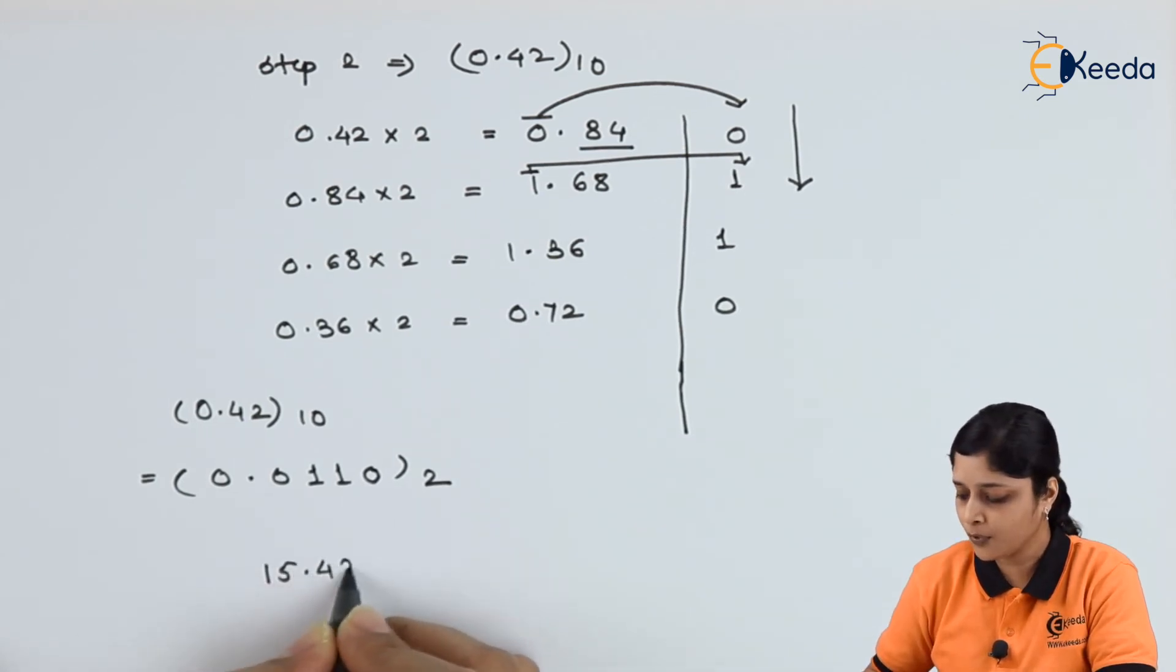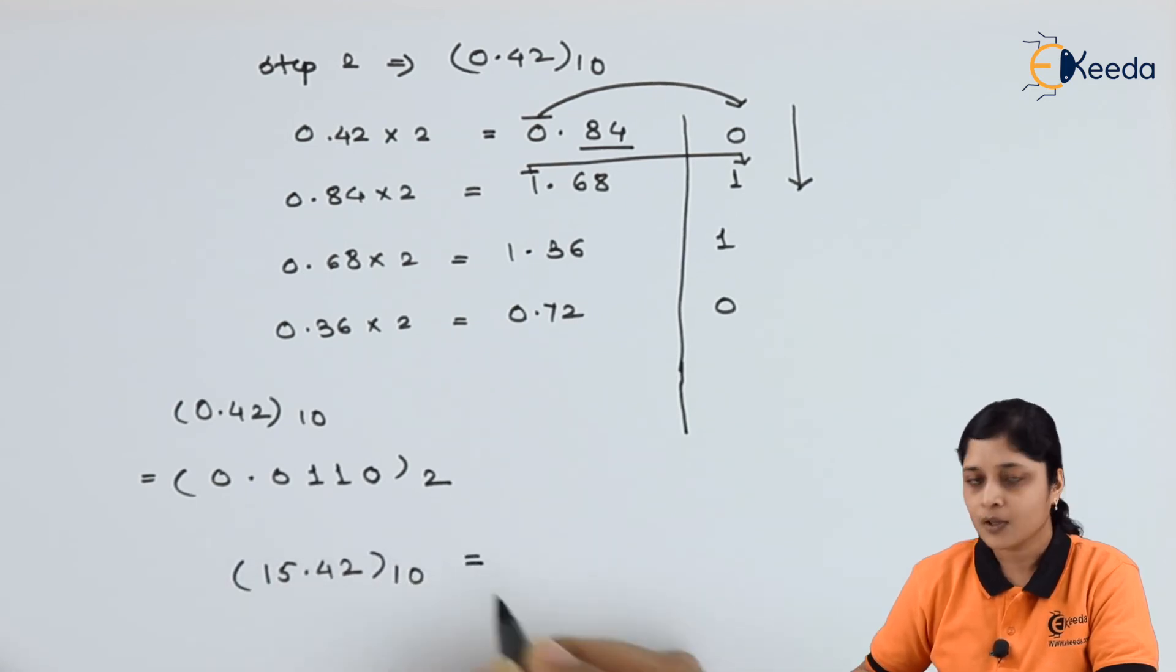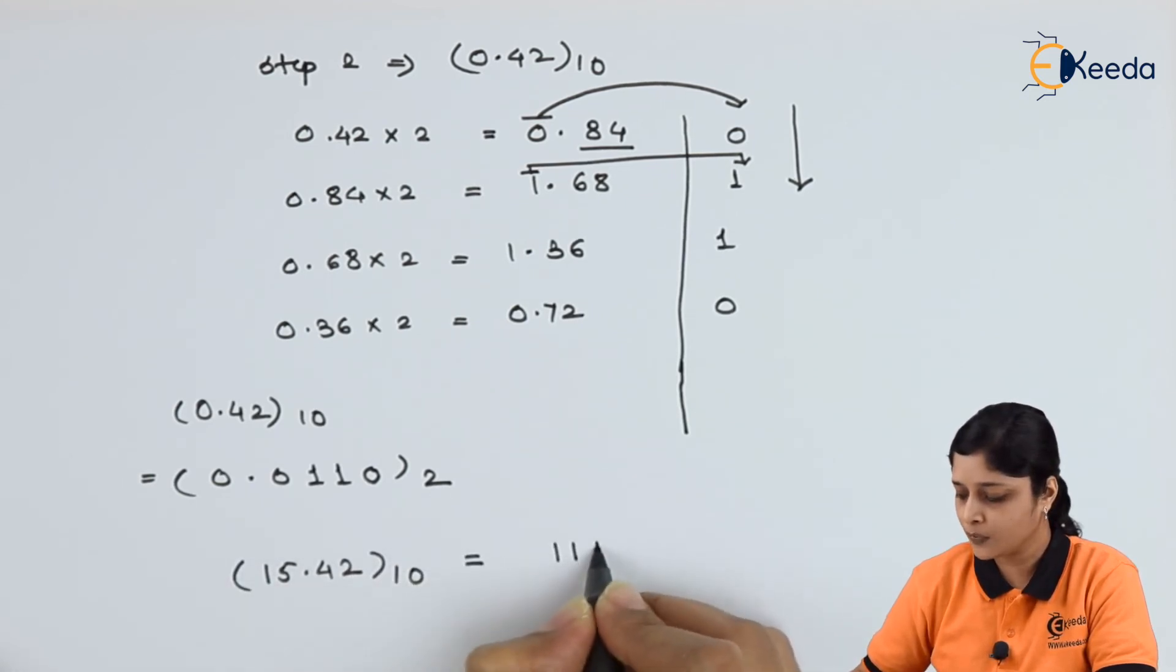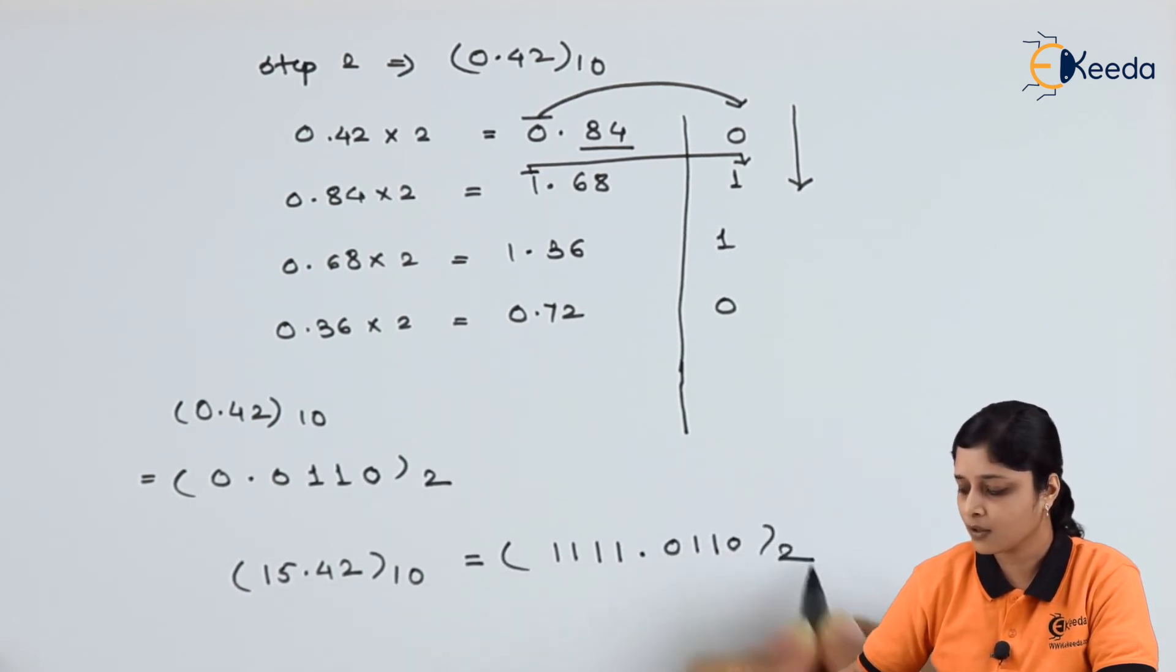So final answer is for 15.42 to the base 10 you will get 1 1 1 1 0.0110 to the base 2.